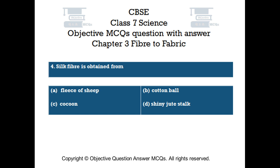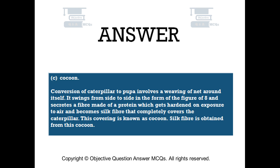The right answer is Option C — Cocoon. Conversion of caterpillar to pupa involves a weaving of net around itself. It swings from side to side in the figure of eight and secretes a fiber made of a protein, which gets hardened on exposure to air and becomes silk fiber that completely covers the caterpillar. This covering is known as cocoon. Silk fiber is obtained from this cocoon.